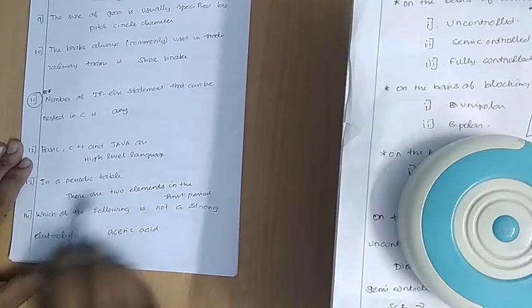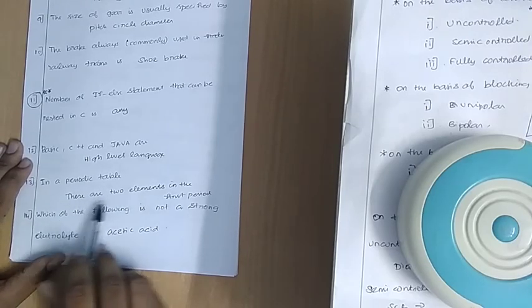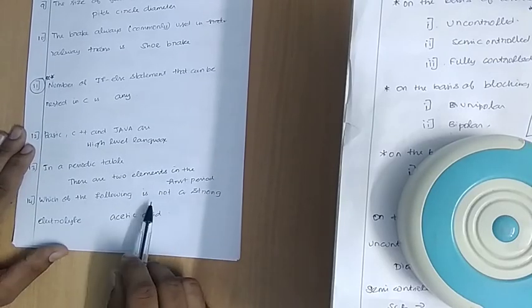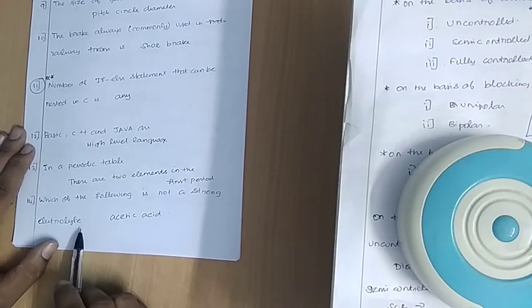In the periodic table there are two elements in the first period: hydrogen and helium. Which of the following is not a strong electrolyte?